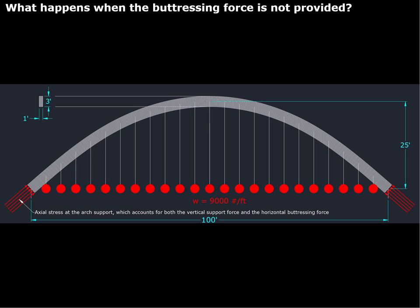We're not going to worry about whether we can buy 1-foot-wide boards, but we'll take this as a simple cross section we can work with. We've given this arch a rise of 25 feet, so the lever arm between the horizontal forces is 25 feet. We show a compressive force on the end face of the arch which is perpendicular to that end face — tangent to the direction of the arch.